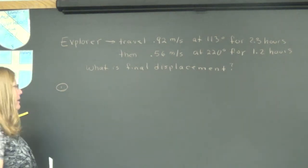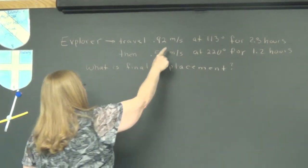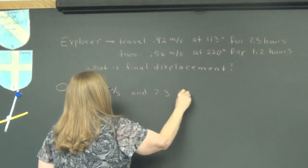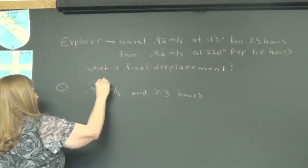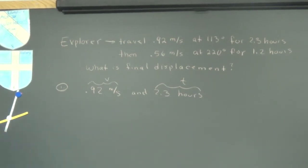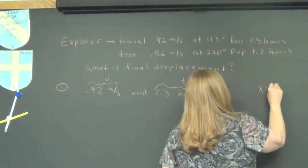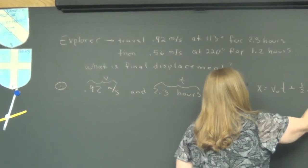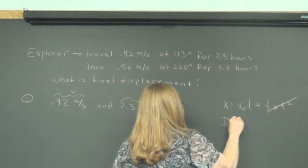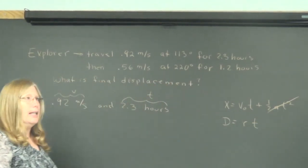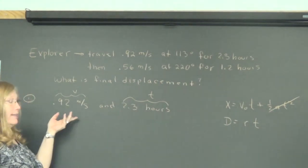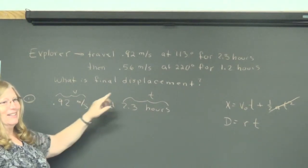First of all, if I want to work in displacement, I'm going to have to take the information here, which is a velocity, an angle, and a time, and change it to displacement vector. We learned a big long equation, but there's no acceleration, so we just end up with the shortened version, distance equals rate times time.